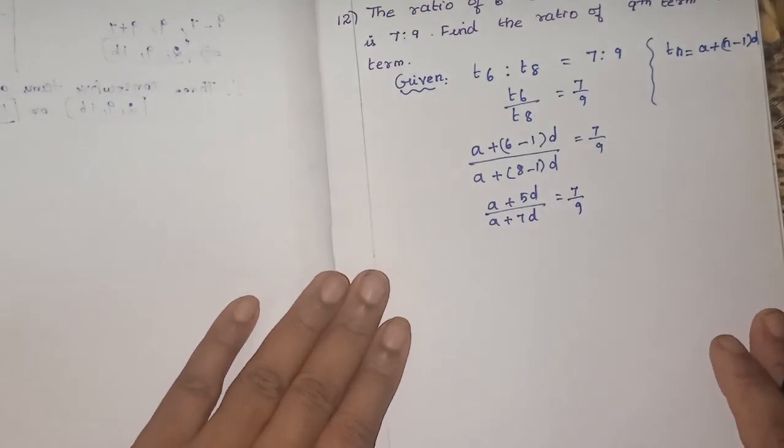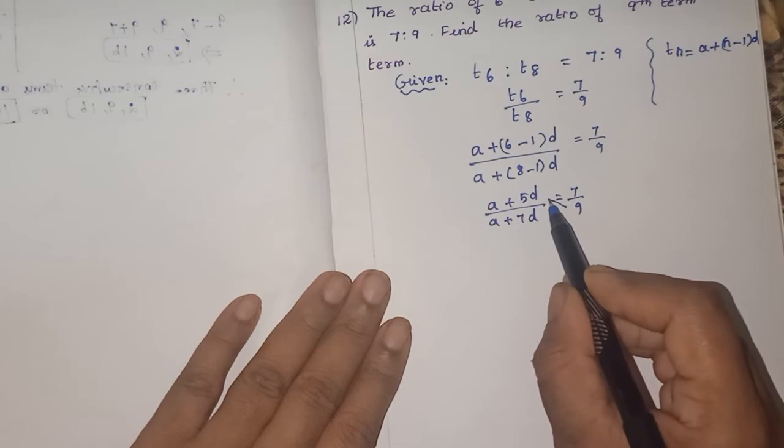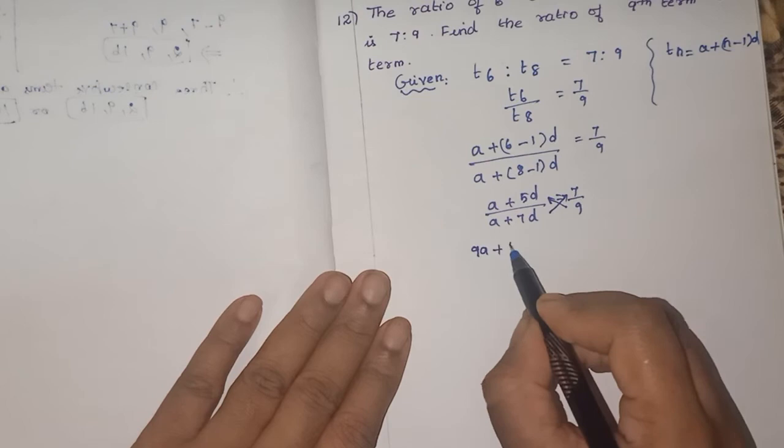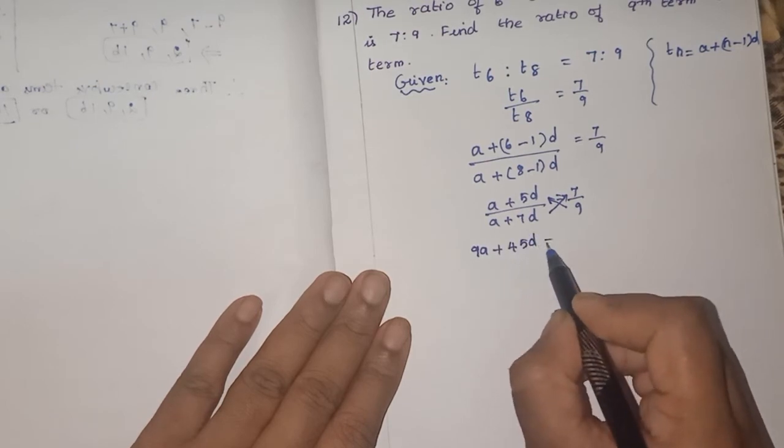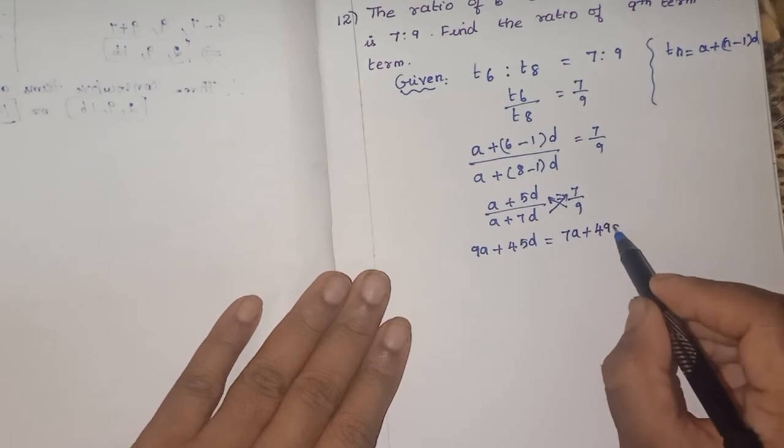So we can cross multiply. So now we can cross multiply. You have to multiply 9 into this term and 7 into this term. So 9A plus 45D is equal to 7A plus 49D.